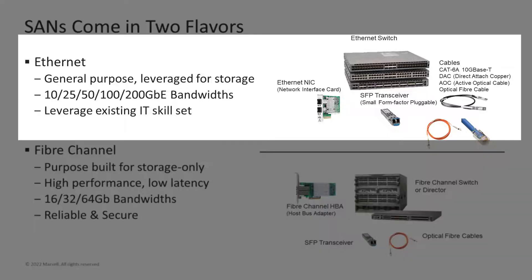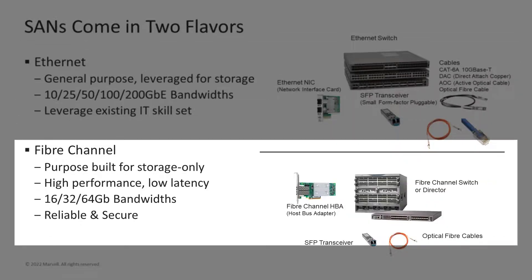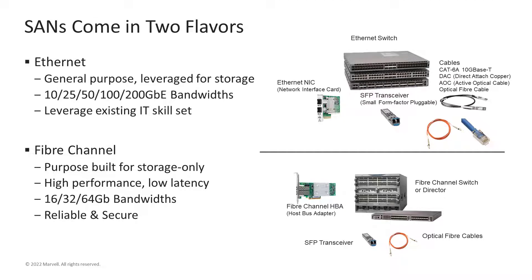As a quick reminder, Ethernet SANs leverage the same NIC and switching components used for server networking. Fibre Channel SANs are designed and dedicated for only storage networking and provide high performance, high reliability, and security as a result. Let's take a deeper dive into the pros and cons of both as they relate to block storage applications.